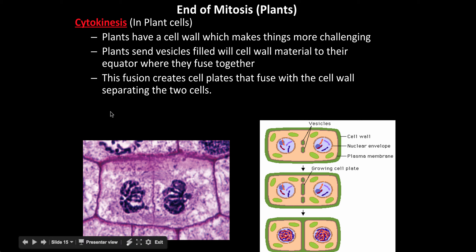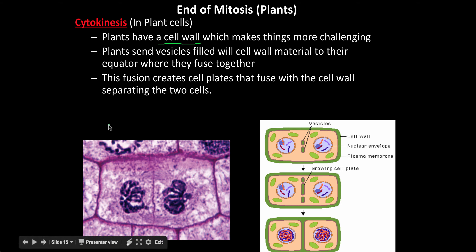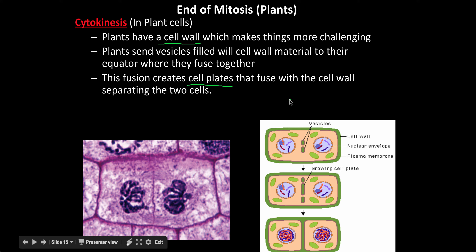The end of mitosis in plant cells is still called cytokinesis, but it looks different because plant cells have a rigid cell wall. While the flexible animal cell membrane allows simple pinching, plant cells need to send vesicles filled with cell wall material to the equator, where they fuse together. This fusion creates a cell plate that fuses with the cell wall, separating the two cells. You can see an actual microscope picture of the cell plate forming, and an animation showing the vesicles building up the cell wall brick by brick.